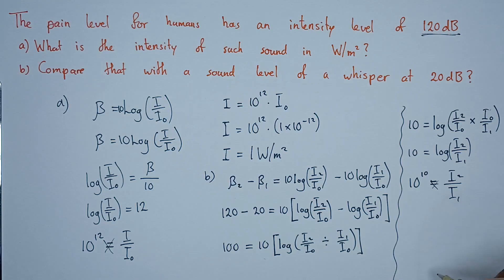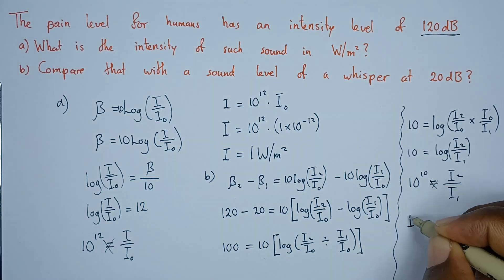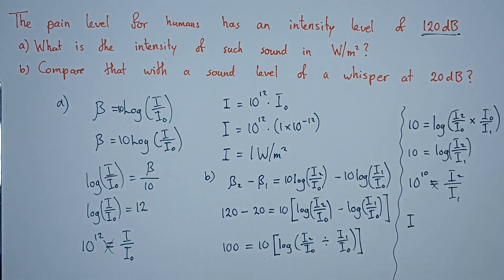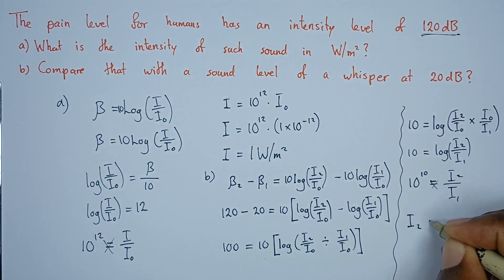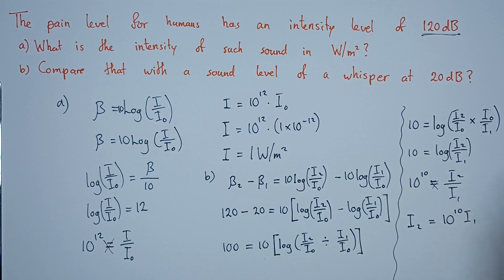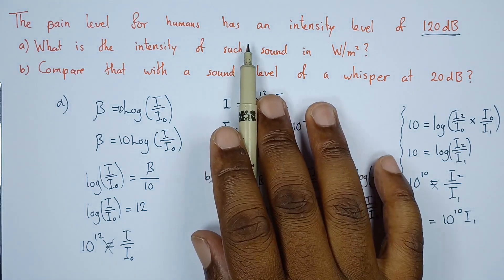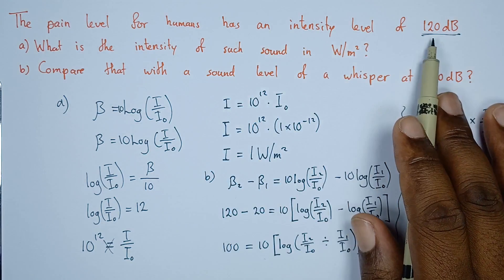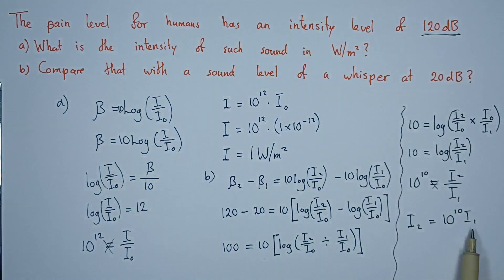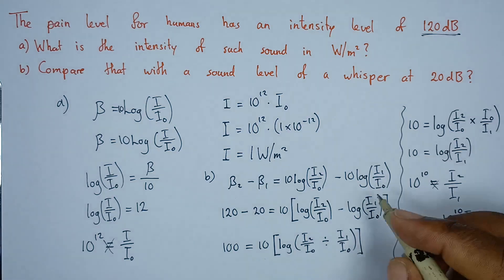If I cross multiply, we'll have I2 equals 10 to the power 10, I1. So this is the relationship between the two. This I2 is for the 120, and I1 is for the 20.